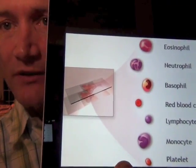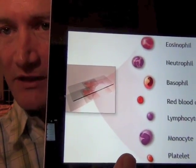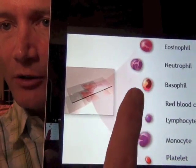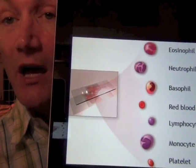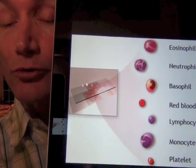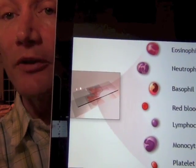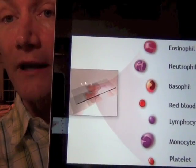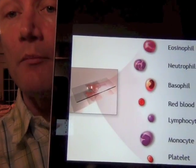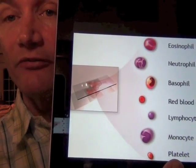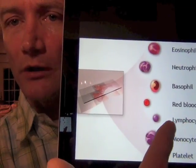When a smear is done with the CBC, they're able to evaluate the different types of white blood cells. Most of the white blood cells are neutrophils and lymphocytes that help to fight both viral and bacterial infections. The monocytes, eosinophils, and basophils are mainly related to allergic reactions.